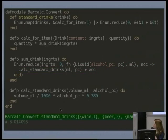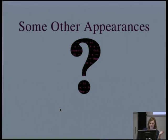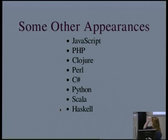Where else have we seen lambdas and higher-order functions? Python, Perl, Haskell of course — Haskell's always on the list. Even JavaScript, PHP — all over the place. Even Java has almost caught up with this. Almost. Hopefully this year.